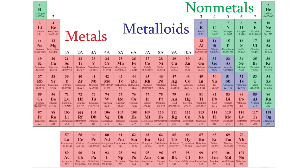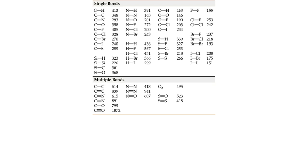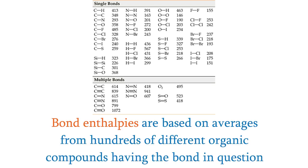Why aren't ionic bonds included in the chart? Well, it turns out that we determine bond enthalpies for ionic bonds in a much different way than for covalent bonds. Bond enthalpies for covalent bonds are determined by taking averages based on the enthalpies of formation of hundreds of different organic molecules that contain those bonds. However, that's not a good way of determining the strengths of ionic bonds, because the strength of the bonds can be very different depending on the lattice structure.